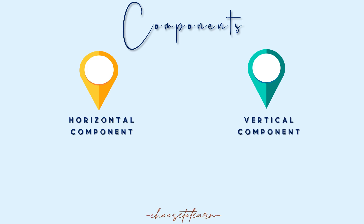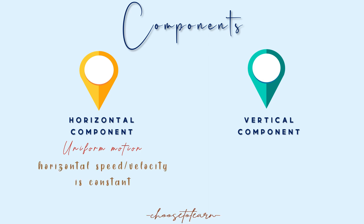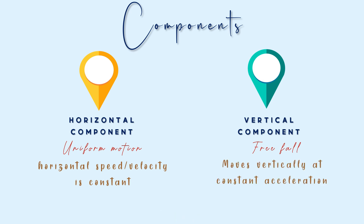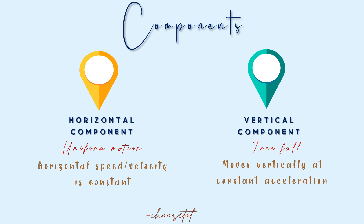The horizontal component is in uniform motion, which means the horizontal velocity does not change — it moves at a constant speed. The vertical component is in freefall, meaning it moves vertically at constant acceleration. Here on Earth, that acceleration equals the acceleration due to gravity. Remember that the horizontal and vertical components are independent from each other, so we evaluate the motion in each component separately.